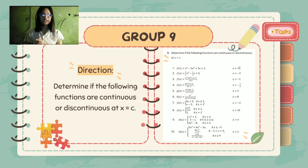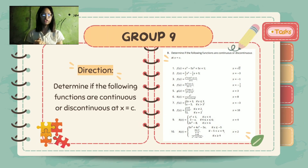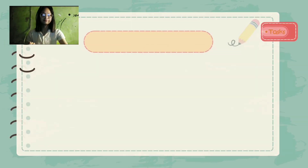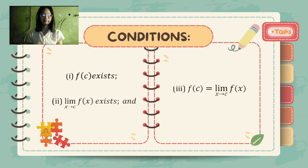Our task for today is to determine if the following functions are continuous or discontinuous at x is equal to c. Let's recall first the following conditions to determine if the function is continuous or discontinuous at x is equal to c.